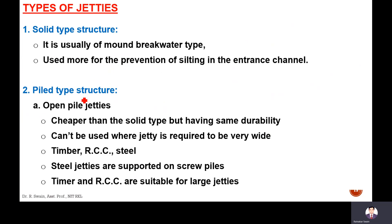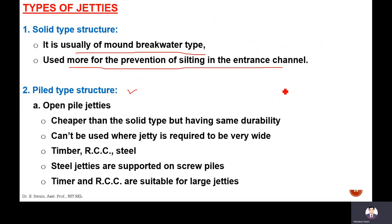Next are the types of jetties. There is a solid type and a pile type, depending upon the construction and the material used. The solid type is usually of the mound breakwater type — like the mole type of breakwater — and is used more for prevention of silting in the entrance channel. It is provided near the entrance so that there will be no silting. The open pile jetty is cheaper than the solid type but has the same durability. Timber, rushes, and steel are used. Steel jetties are supported on screw piles, and timber and rushes are suitable for large jetties.